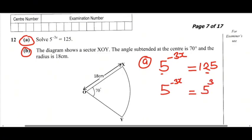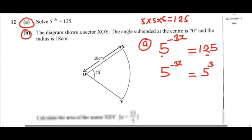Because if you multiply 5 by itself 3 times, 5 times 5 times 5 is going to give you 125. So that is what you have done there. Now, from there, you can see that the bases are the same. Here you have base 5, and here you have base 5. That is the essence of writing 125 with a base of 5. Since the bases are the same, you are just going to equate the powers. So you say negative 3x is equal to 3.